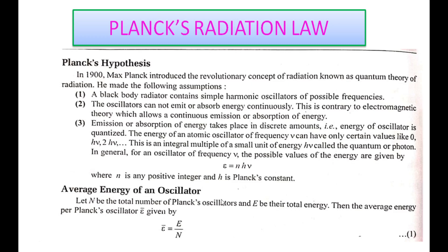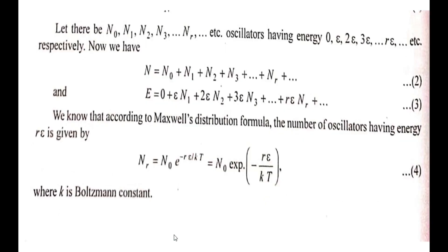Let capital E be the total energy and capital N be the total number of oscillators. The average energy is given by ē = E/N. The number of oscillators is n₀, n₁, n₂, n₃, and so on.